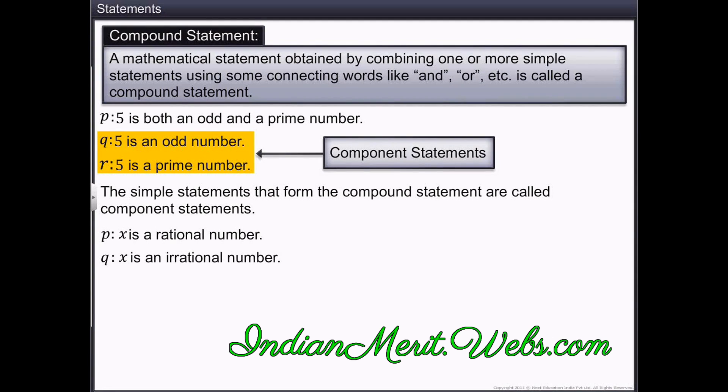Let's combine the given statements using the word, or. The compound statement obtained is, x is either a rational number or an irrational number.